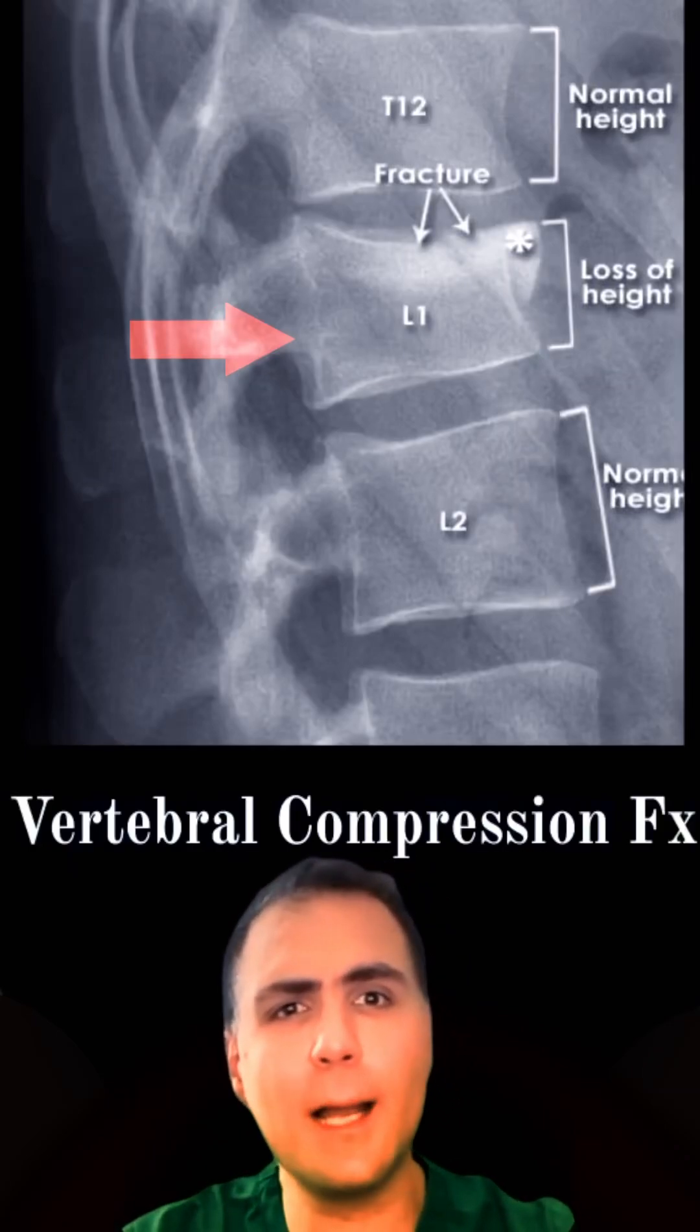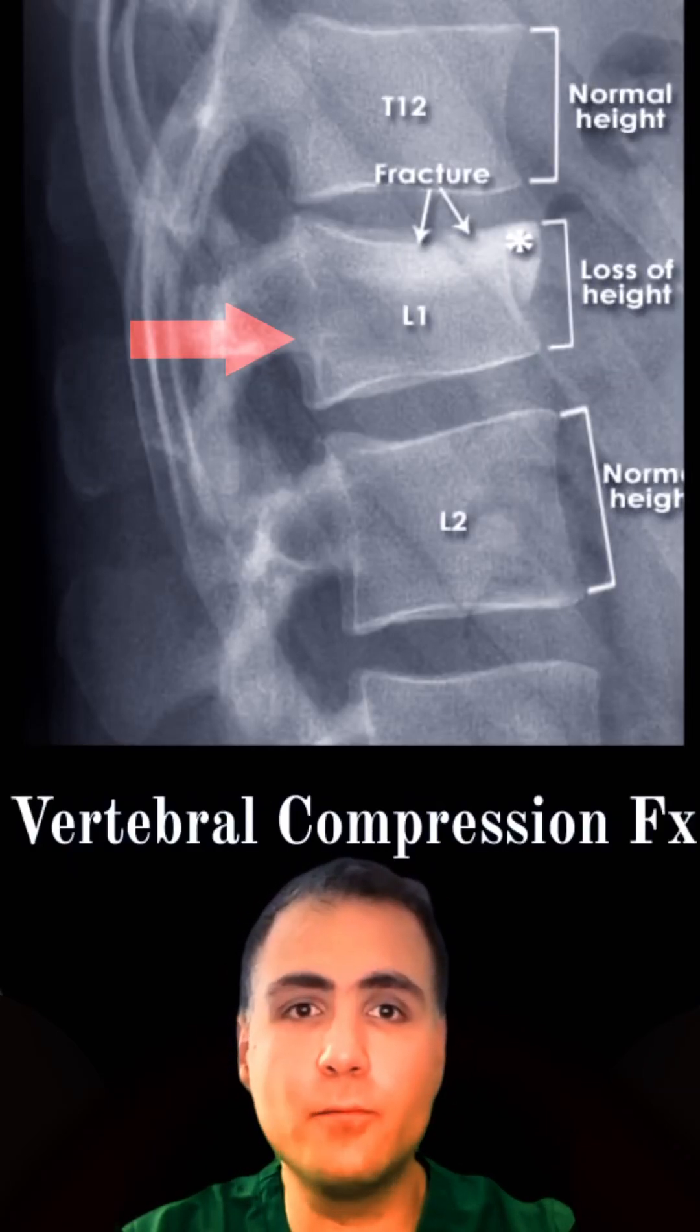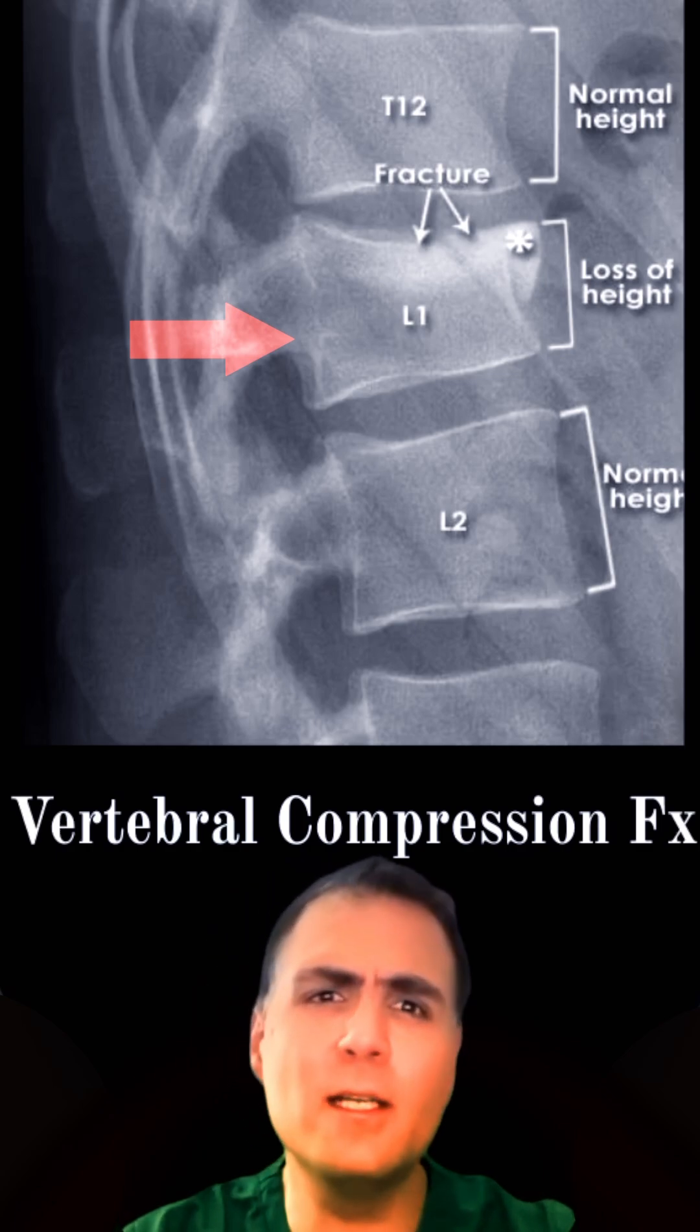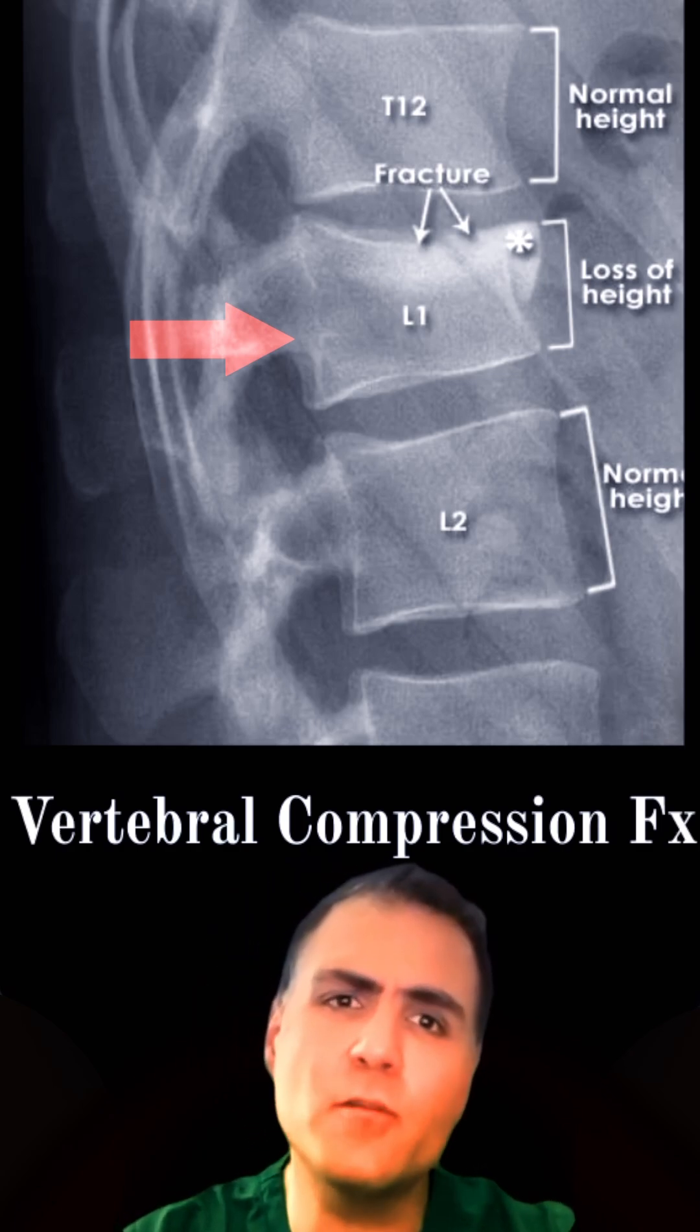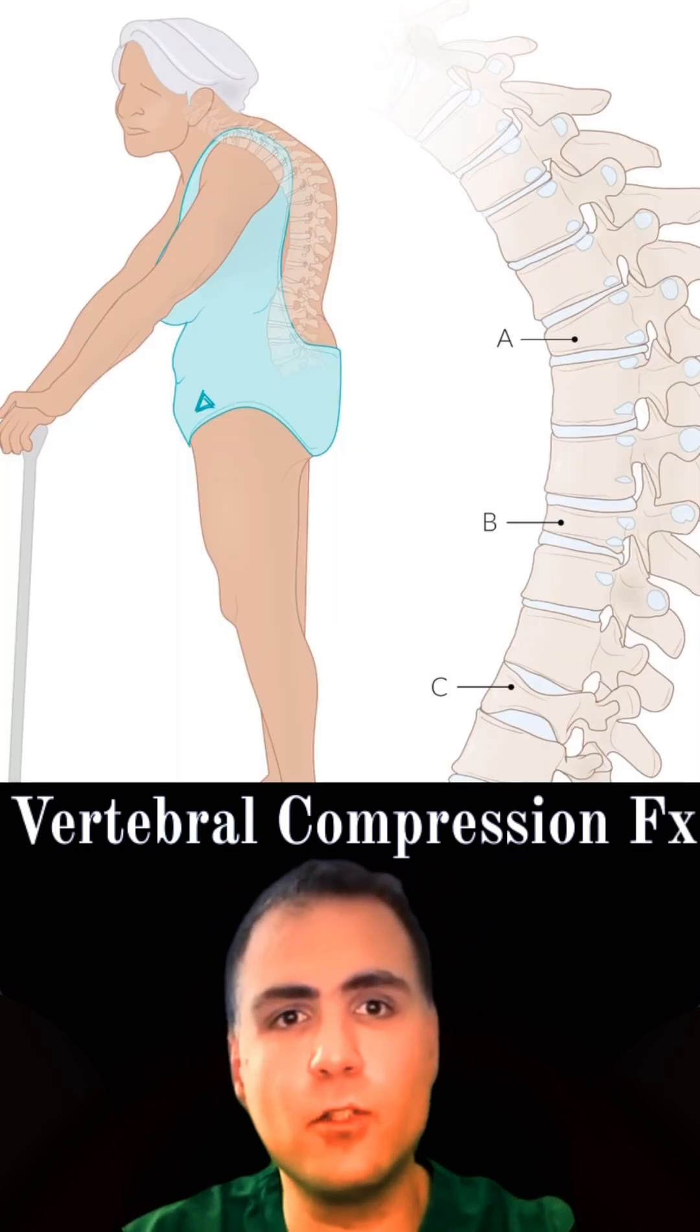Vertebral compression fractures involve the collapse of a vertebral body with a height reduction of 20% or more. These fractures are most common in adults over 65, especially women with osteoporosis.